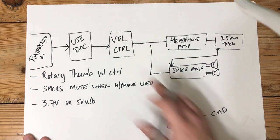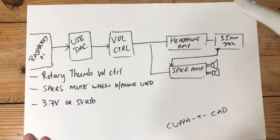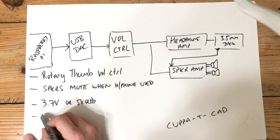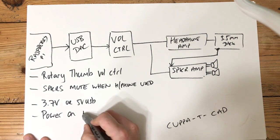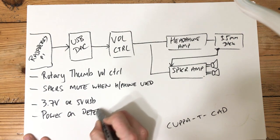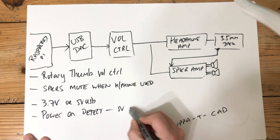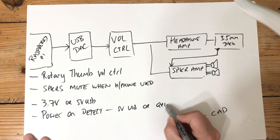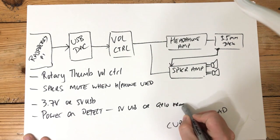It needs to have a single volume control for all rather than having two separate knobs. There'll be a pain. And then the amplifiers need to power on detect. And we can either use 5V USB for that or a GPIO from the Pi.